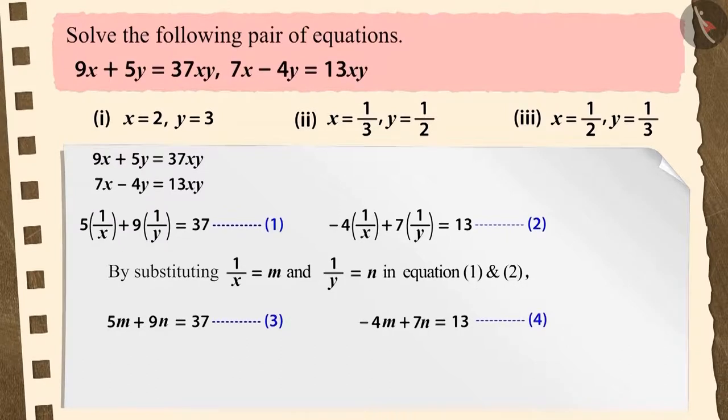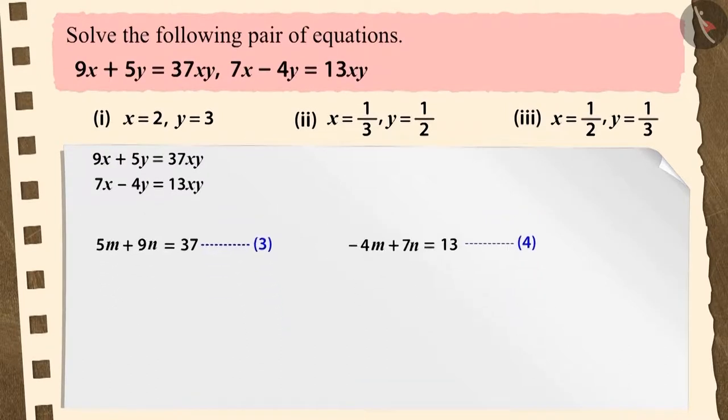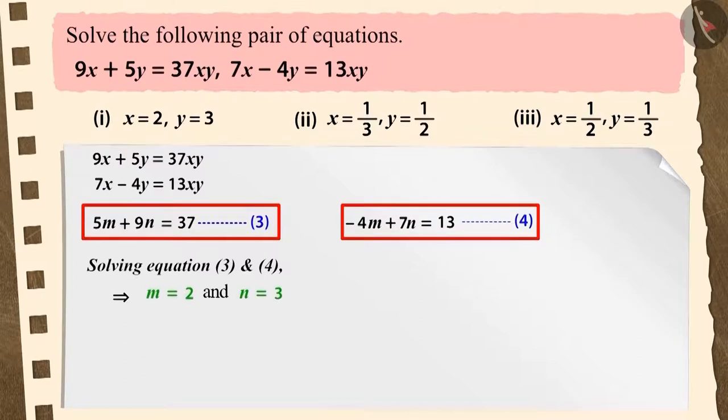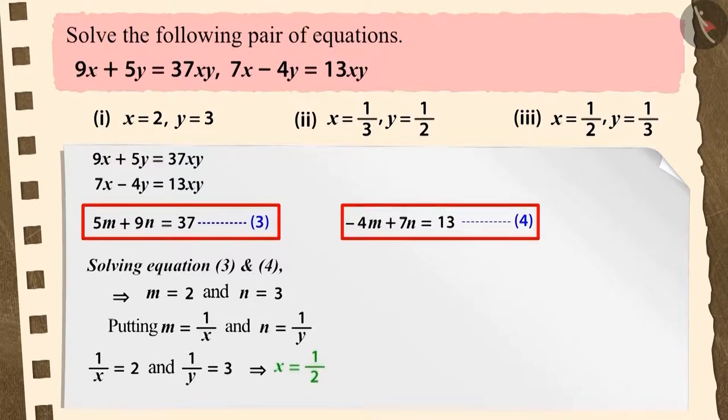Now on solving three and four by any method, we get m is equal to 2 and n is equal to 3. Now again, keeping m is equal to one by x and n is equal to one by y, solving gives us x is equal to one by two and y is equal to one by three.